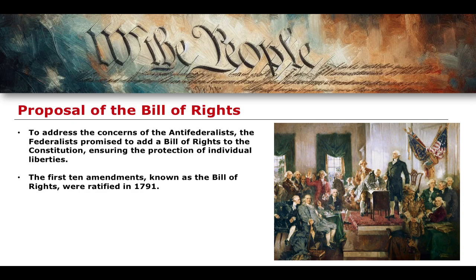One of the things issued to address the concerns of the Anti-Federalists was that the Federalists promised to add a Bill of Rights to the U.S. Constitution, ensuring the protection of individual liberties. This Bill of Rights was ratified in 1791 and represents the first 10 amendments to the U.S. Constitution. We will get into the Bill of Rights in far more detail later, but fundamentally it includes freedom of speech, right to religion, and freedom of assembly, all elucidated in the First Amendment.